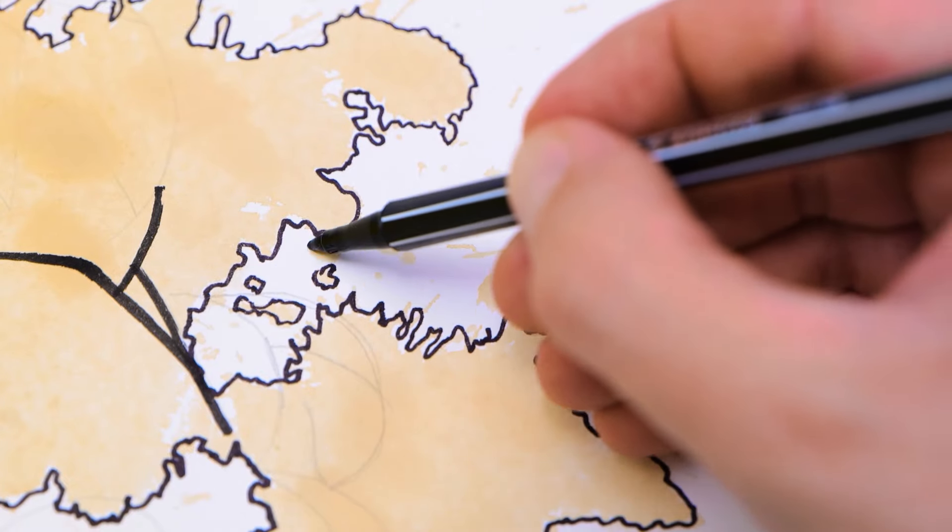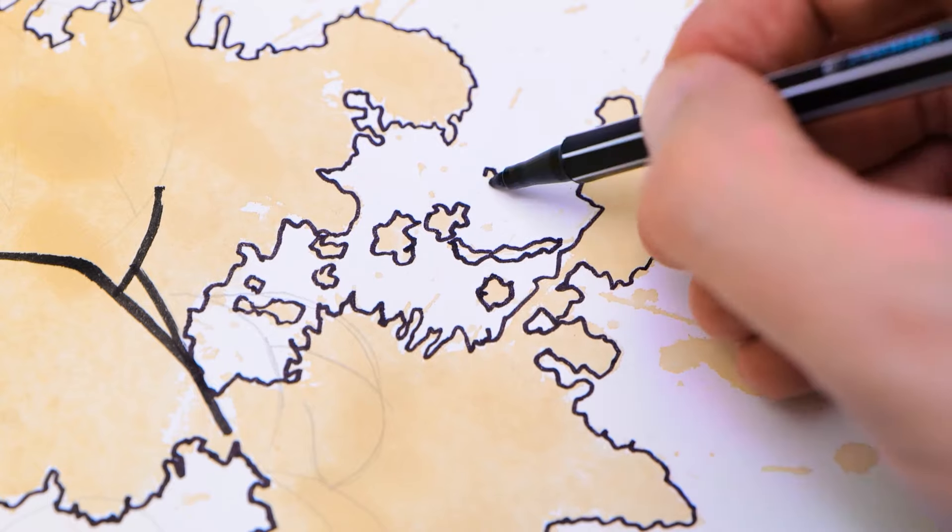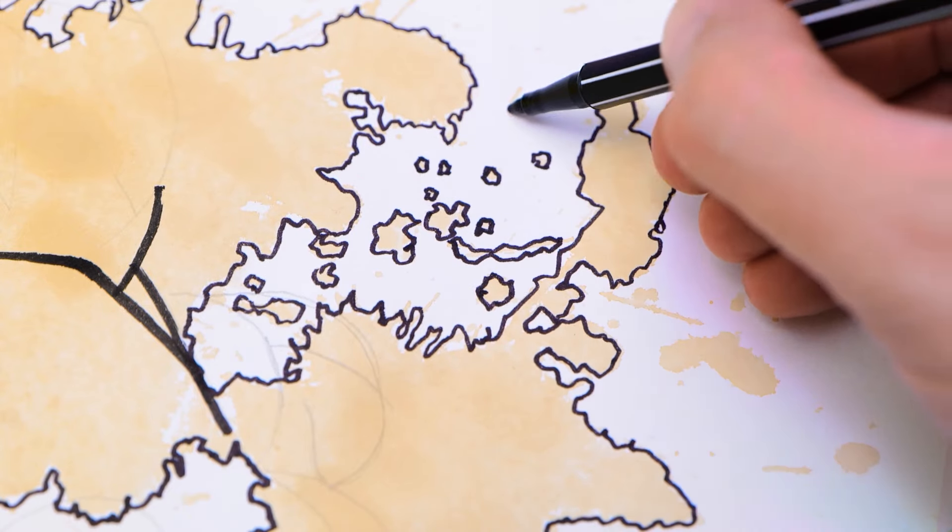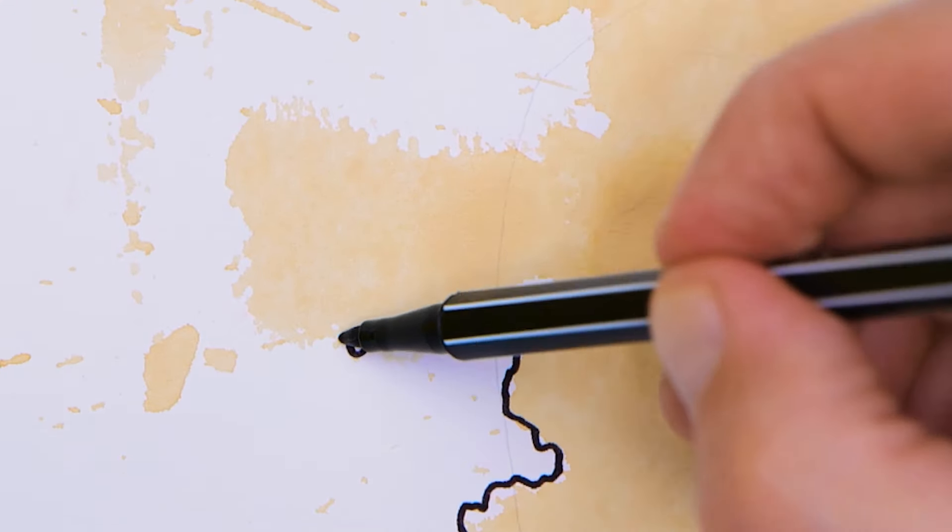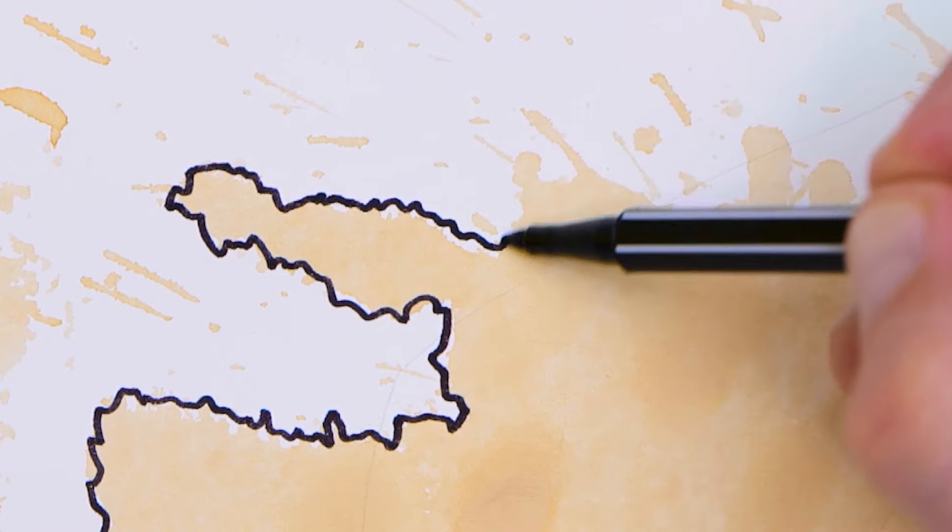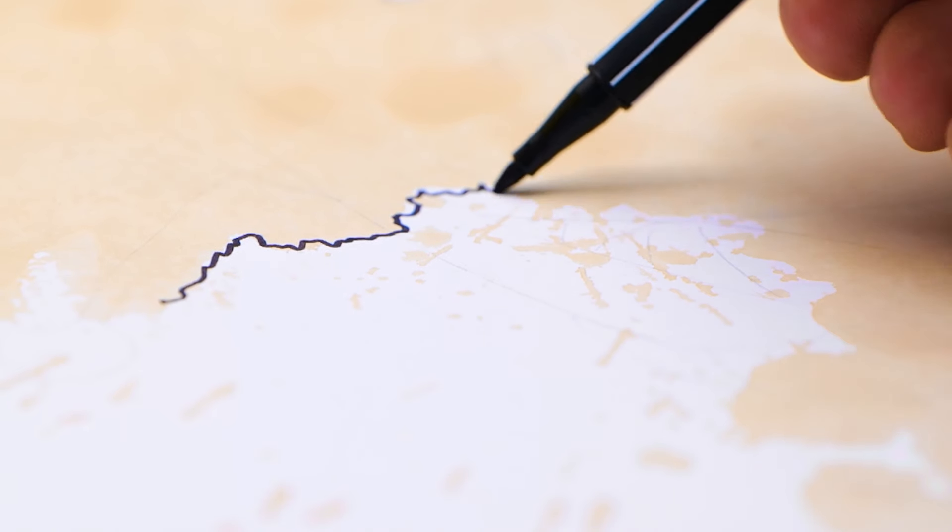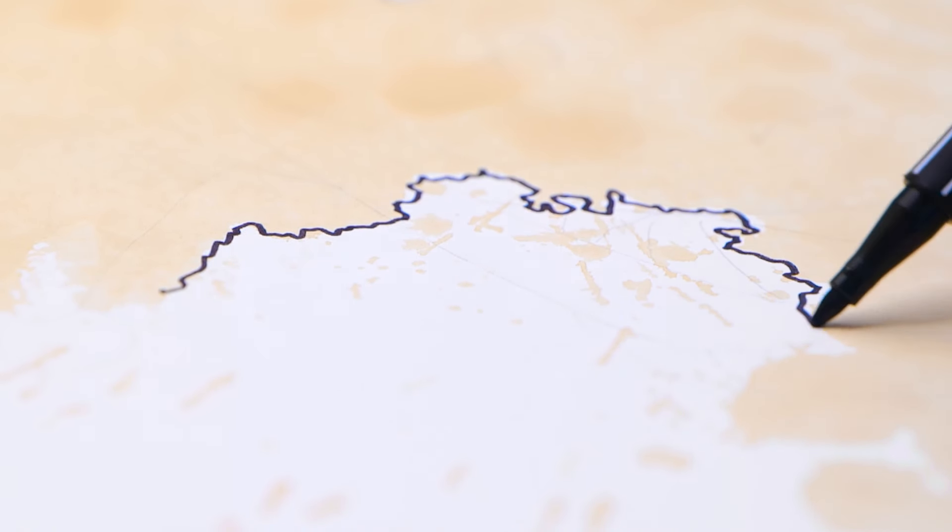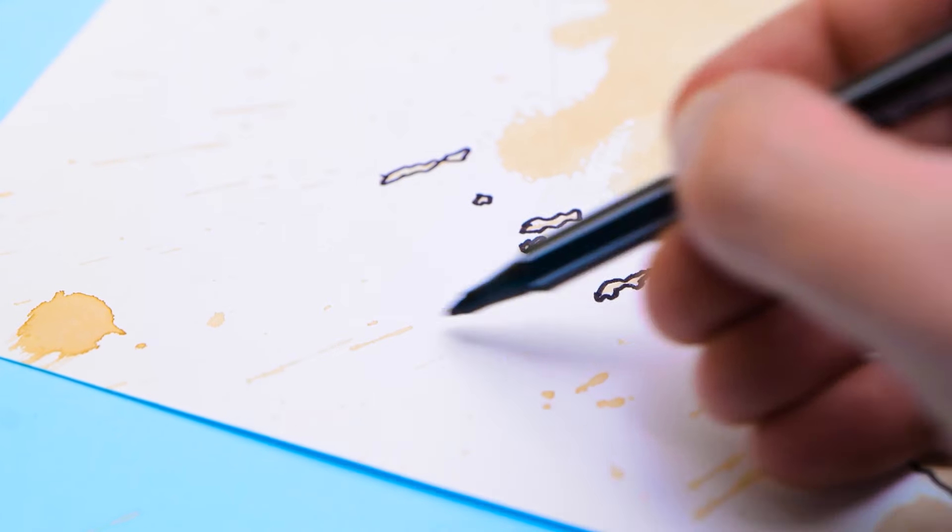Yep, there's gonna be a few tricky parts here and there. But we can do this. Just let the coffee stains guide you. Make sure you outline all the splashes. Sometimes I do this when I'm sad or mad. It helps me settle down and feel calm. It's such a nice, relaxing technique.